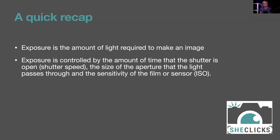Exposure is controlled by the amount of time the shutter is open — also known as shutter speed — the size of the aperture that light passes through, and the sensitivity of the film or sensor, also known as ISO.